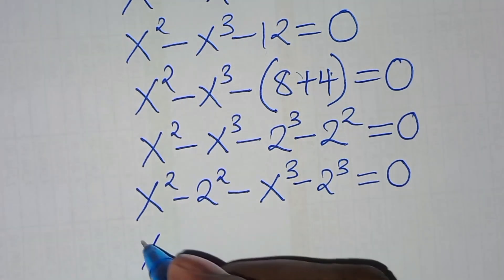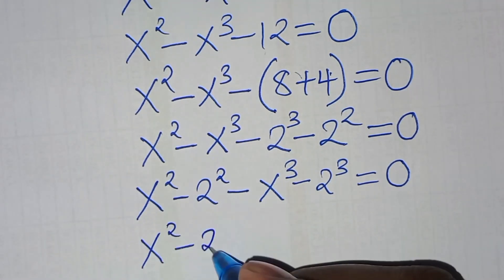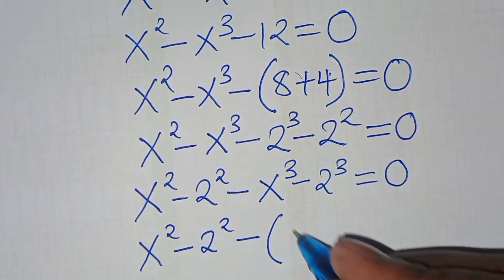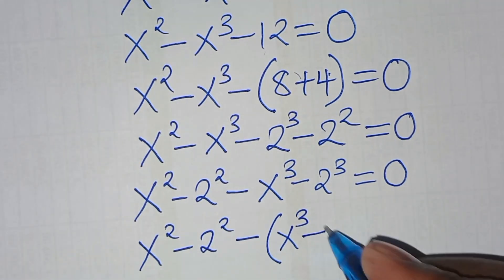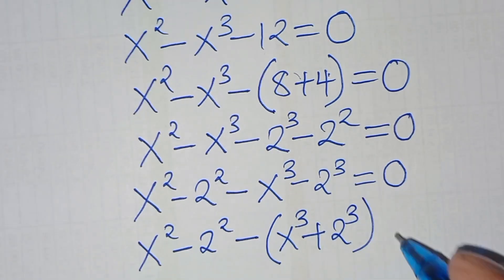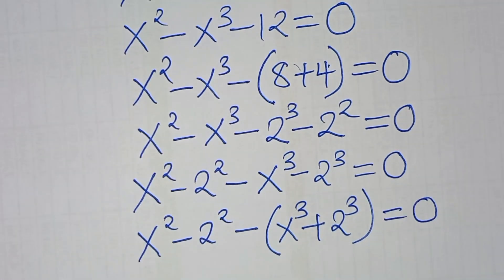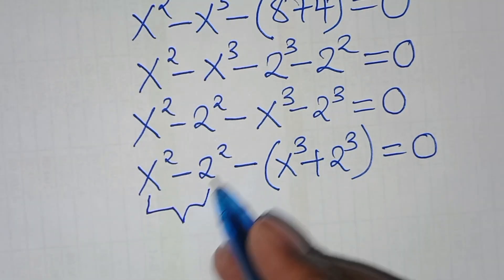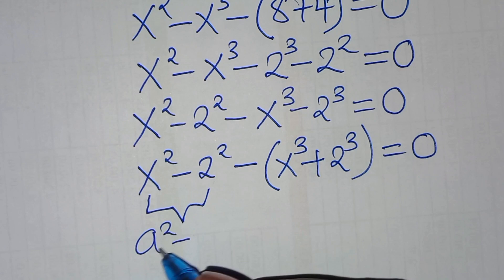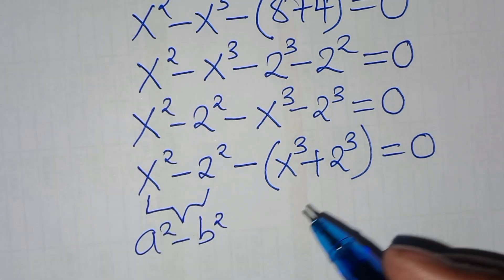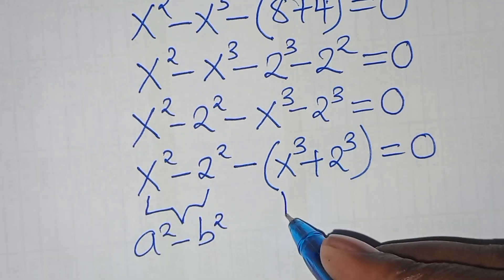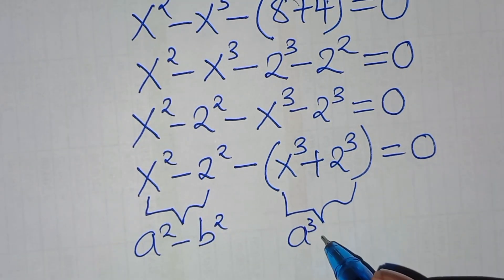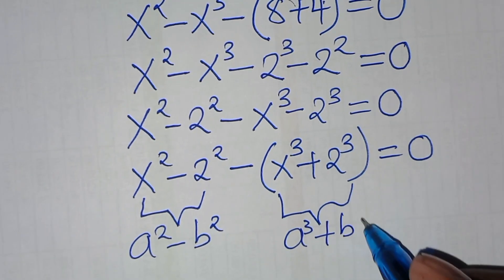From here, we can express this as x to power 2 subtract 2 to power 2, subtract x to power 3 plus 2 to power 3, this is equal to 0. Now we have two parts here: the first part is the difference of two squares, expressed as a squared minus b squared, and then we have the second part, which is the sum of two cubes, which is in the form of a cubed plus b cubed.